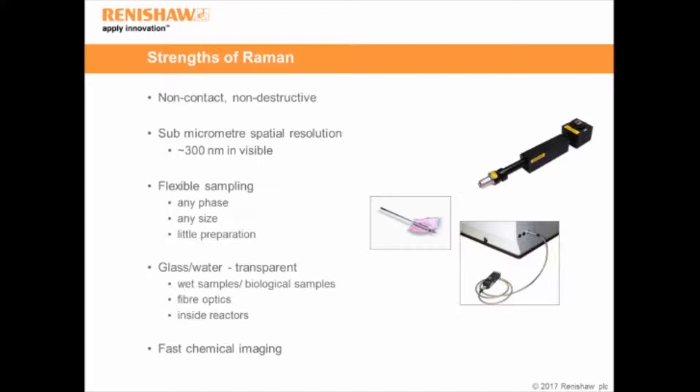Because we tend to work in the optical for Raman spectroscopy, both glass and water are transparent, so we can work through them. This means we can examine wet samples, in particular biological samples.